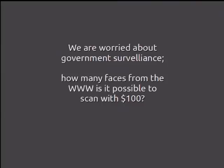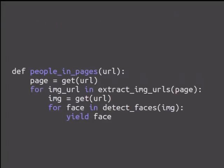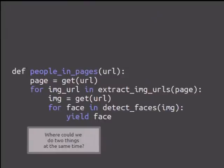We're actually going to think about surveillance: how practical would it be for a government to scan every image on the internet, and how many images could you get for $100? That's our project for today. Starting with a URL, we retrieve a page with a get function, extract image URLs, download those images, detect faces, and yield the coordinates of each face within each image. That's a fairly workable pipeline.